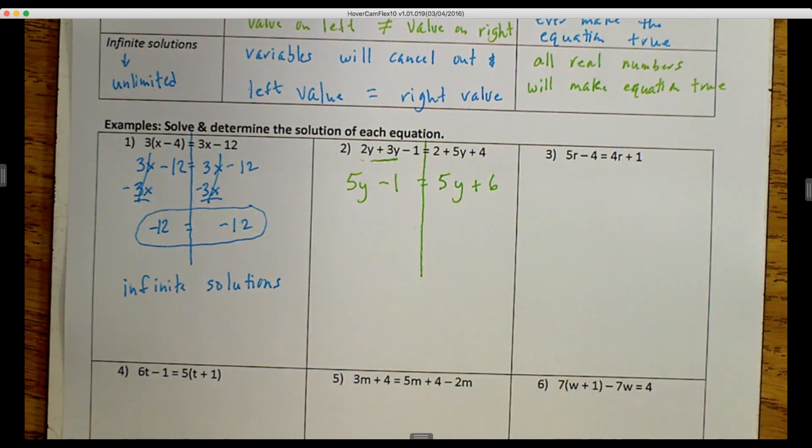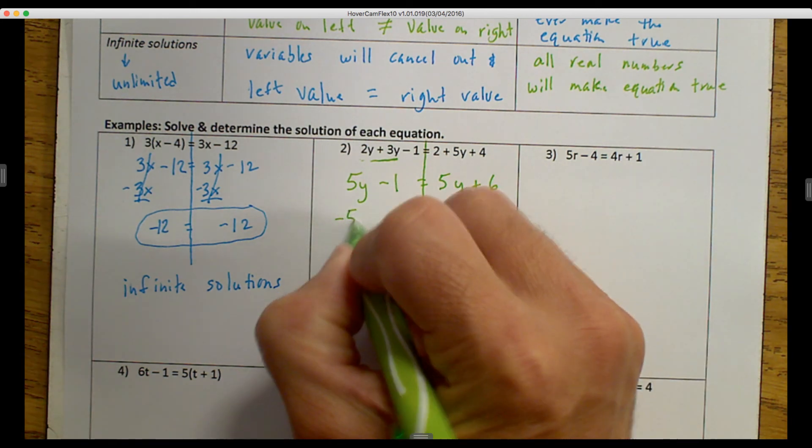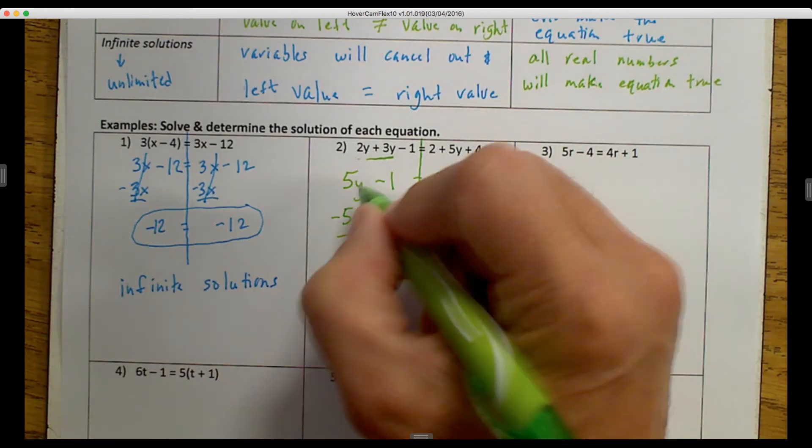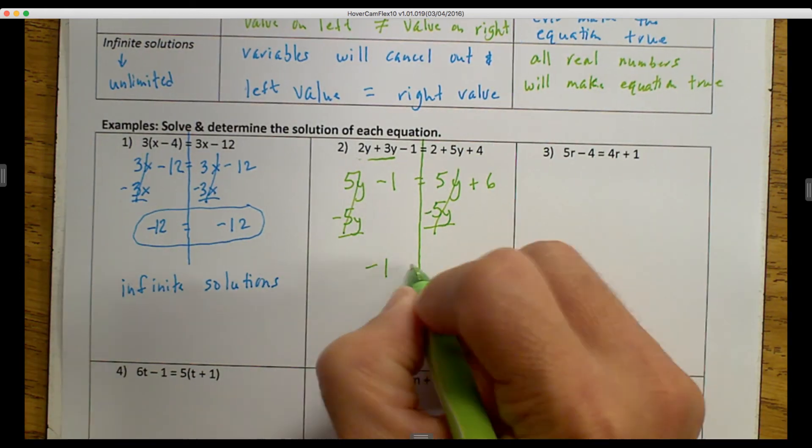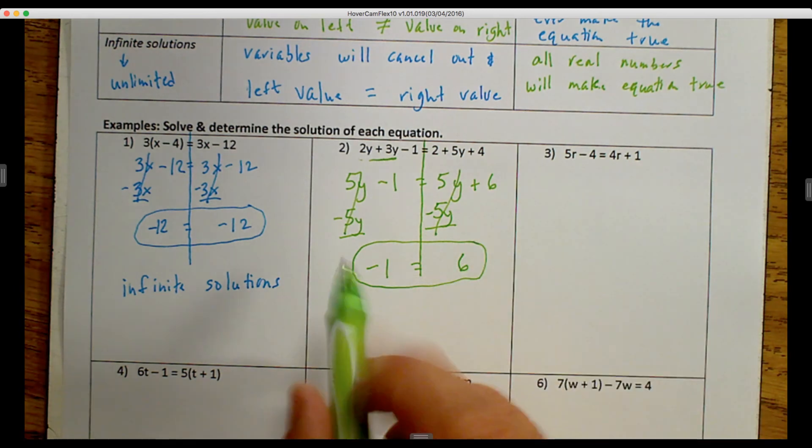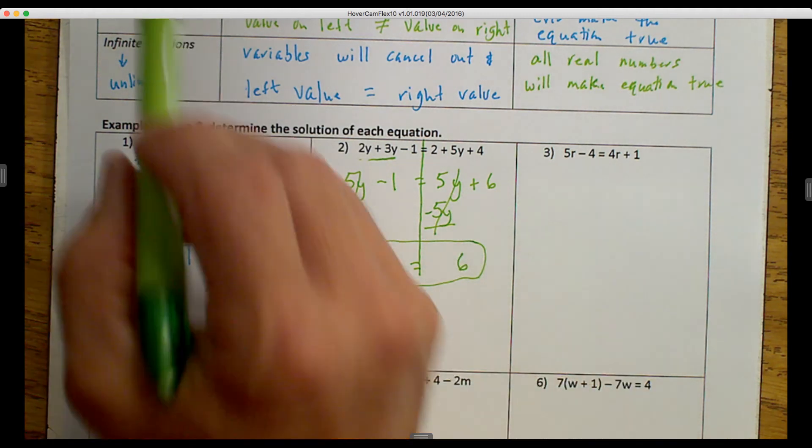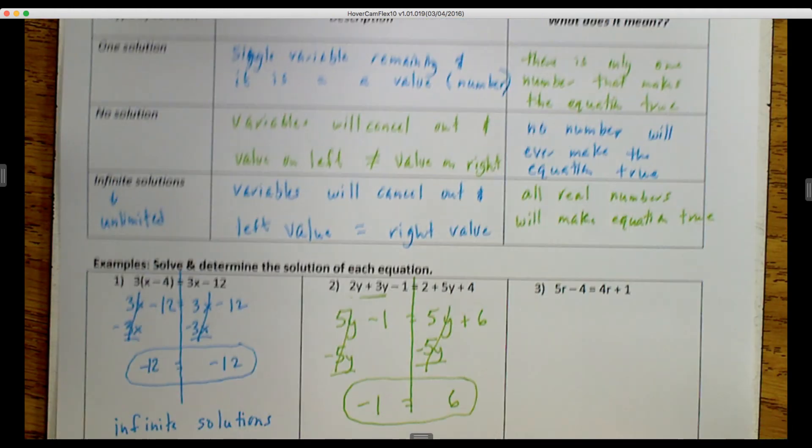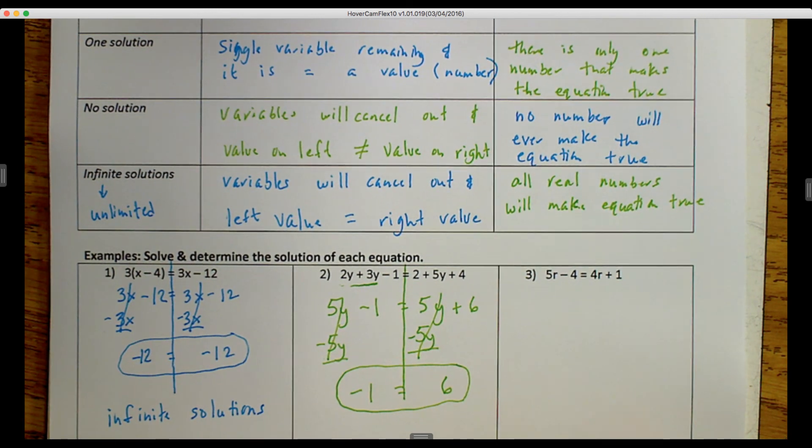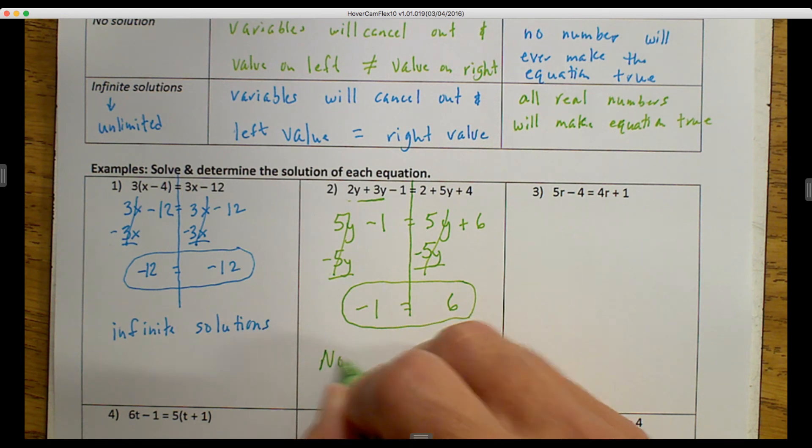And I can notice that the variables are the same, and the constants are different. So I'm going to move my variables, minus 5y, minus 5y, and these cancel out. And then I get negative 1 is equal to positive 6. Now, again, my variables canceled out, and the left side didn't equal the right side. So which one up here talks about the variables canceling out, and the value on the left not equal to the value on the right? That would be our no solution. So in this one, the answer would be no solution.